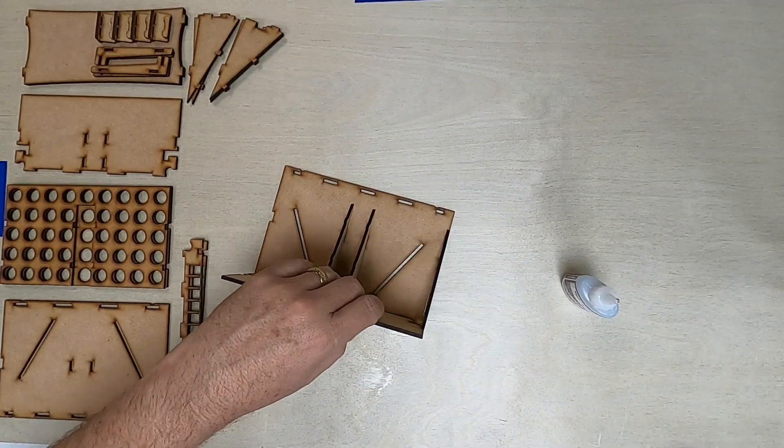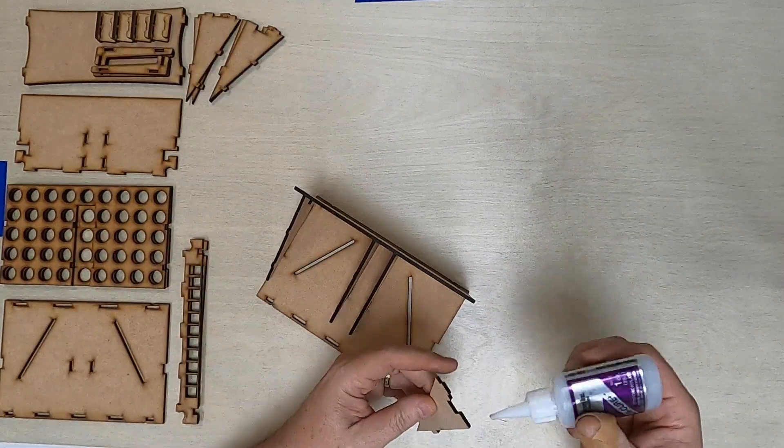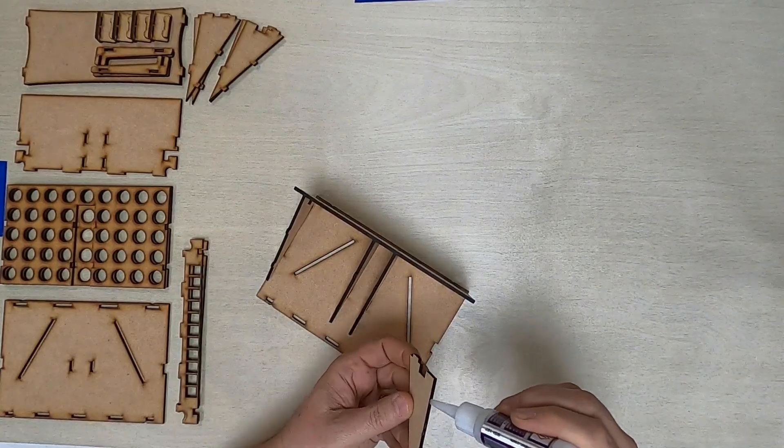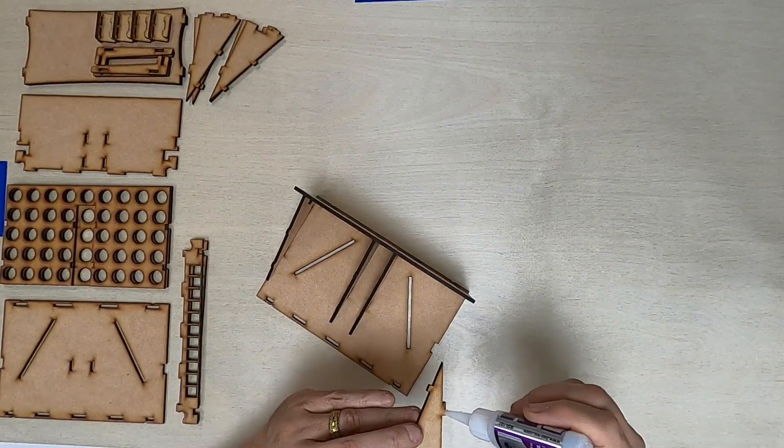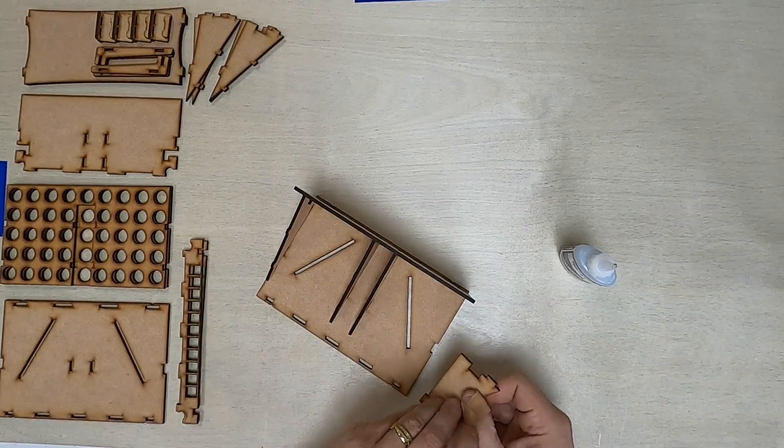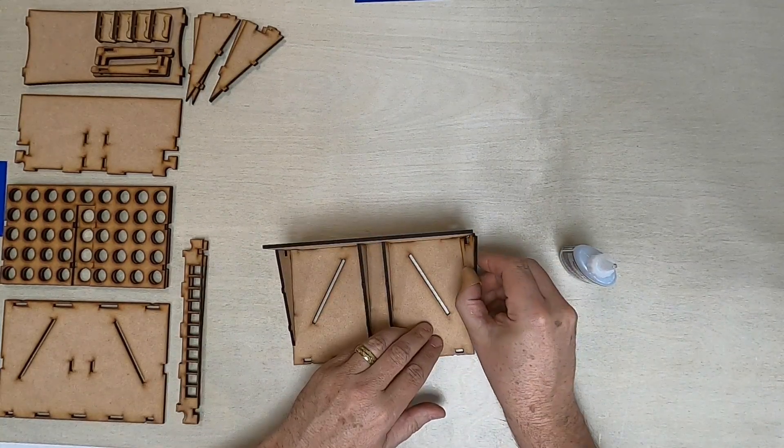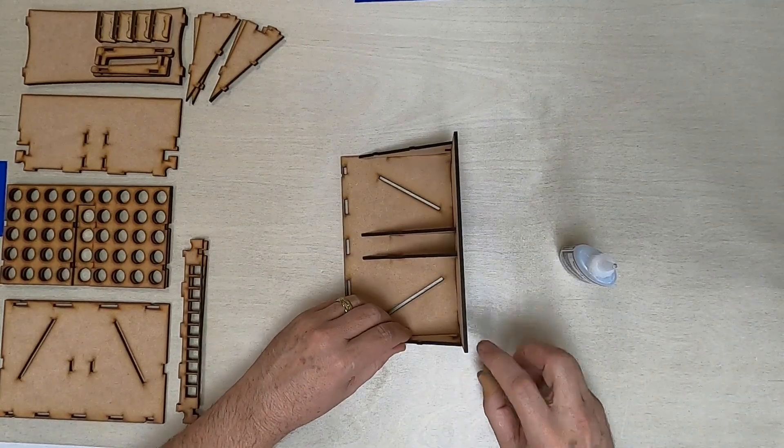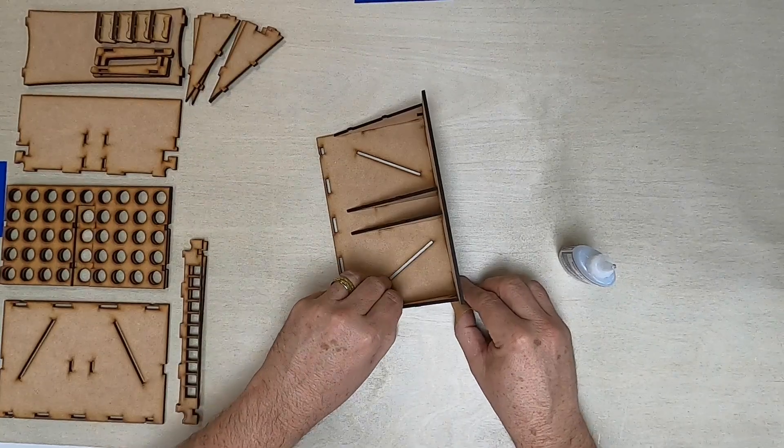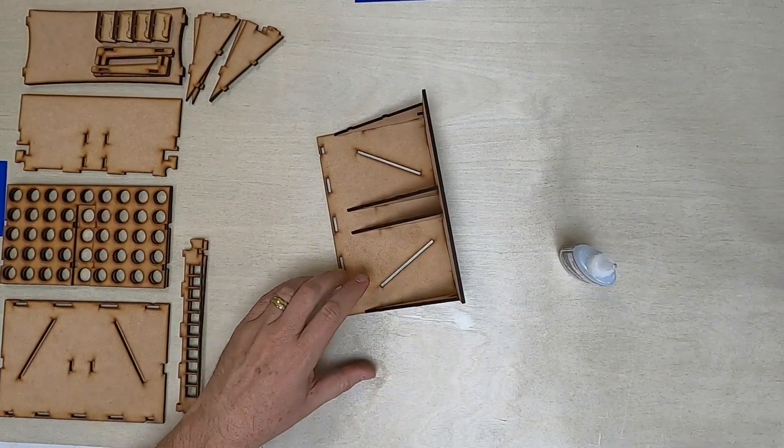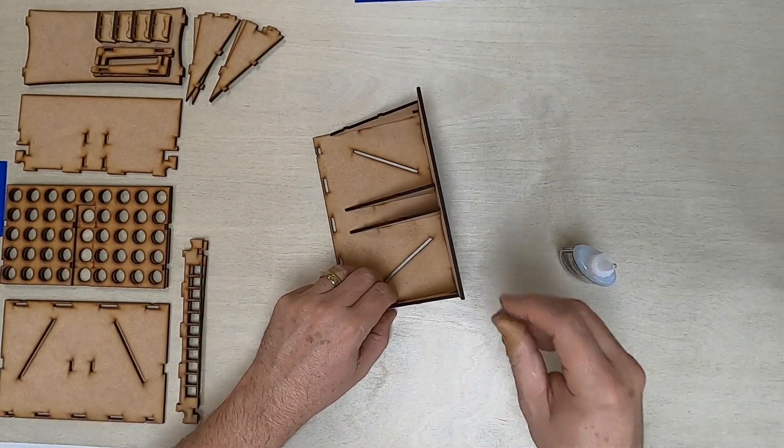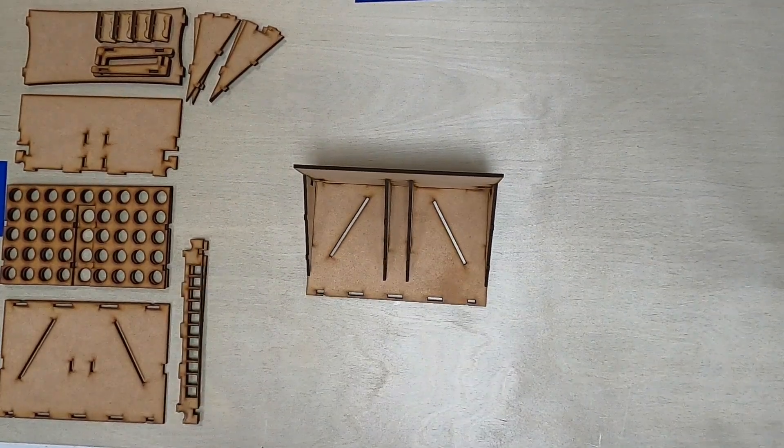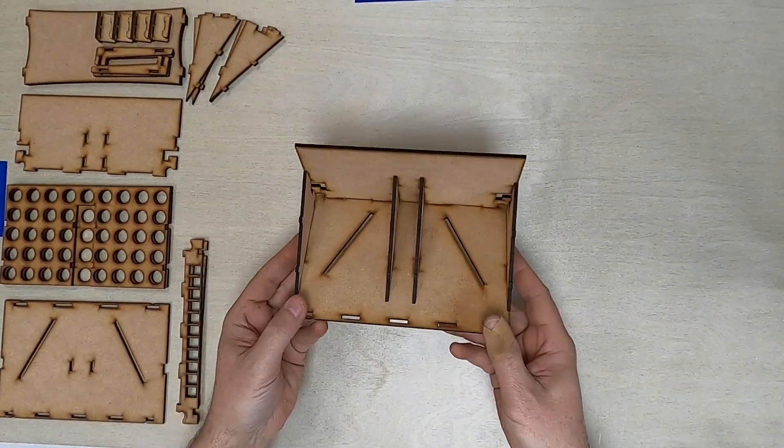And I'm going to spray it with a little bit of spray just to get it to set quicker. All right, let's put the other one on. And this one goes on the same way. Just make sure everything is flush. And I'm going to put some spray on to help it dry quicker. And that is that part of it.